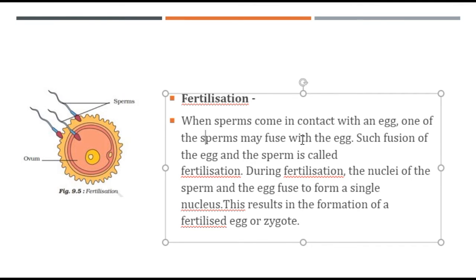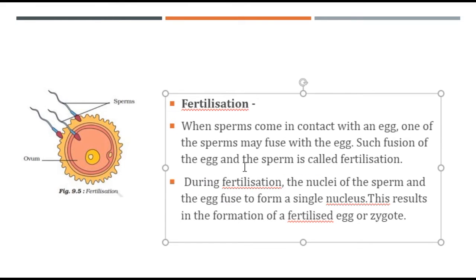What is fertilization? When sperms come in contact with an egg, one of the sperms may fuse with it. The fusion of the egg with the sperm is called fertilization. During fertilization, the nuclei of the sperm and the egg fuse to form a single nucleus. This results in the formation of a fertilized egg, or zygote.